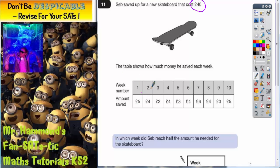So in week 1 he saved £5, week 2 he saved £4, week 3 only £2 and so on. You can see that in some weeks he saved more than others. So in week 7 he actually saved £6.